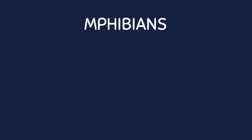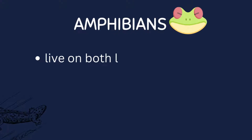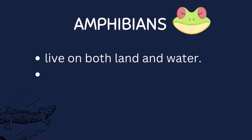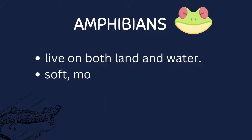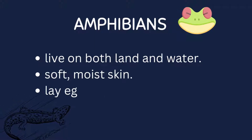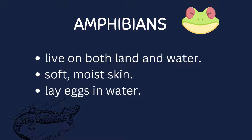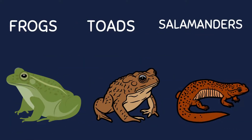Amphibians are a group of animals that can live on both land and water. They have soft, moist skin and lay eggs in water. Frogs, toads, and salamanders are examples of amphibians.